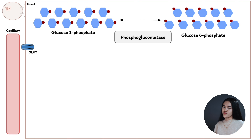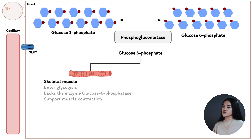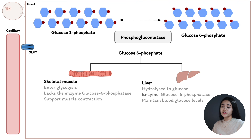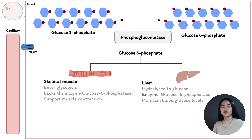What happens to glucose-6-phosphate depends on the tissue. In skeletal muscle, glucose-6-phosphate enters glycolysis to obtain the energy needed for muscle contraction during exercise. In the liver, glucose-6-phosphate is dephosphorylated — the phosphate group is removed — and hydrolyzed to glucose by the enzyme glucose-6-phosphatase. This enzyme is present in liver and kidney but not in skeletal muscle or other tissues, and its purpose is to help maintain blood glucose levels.